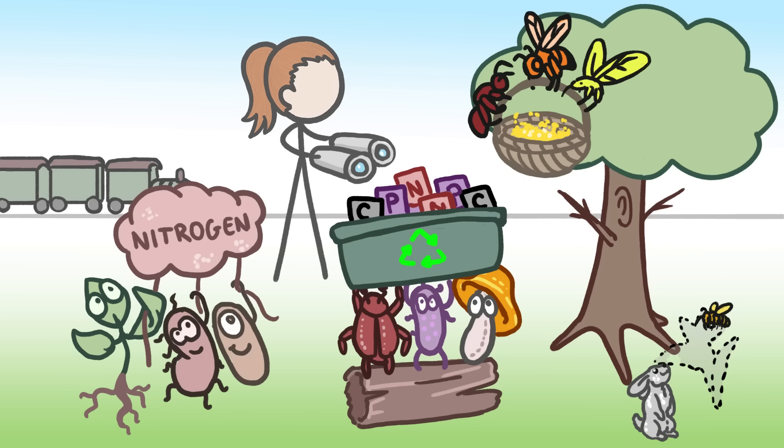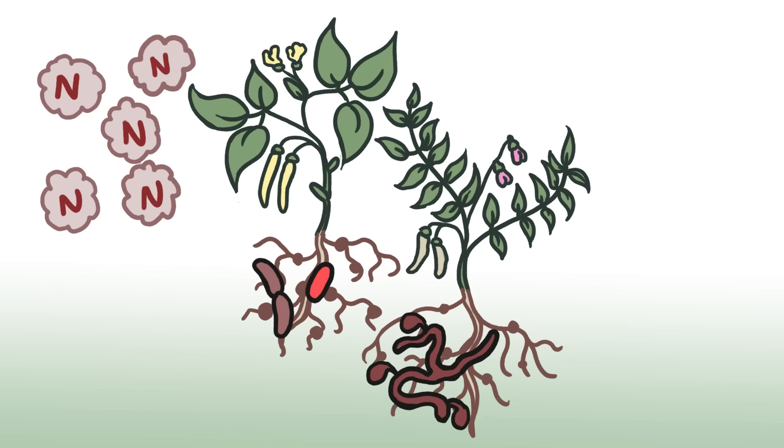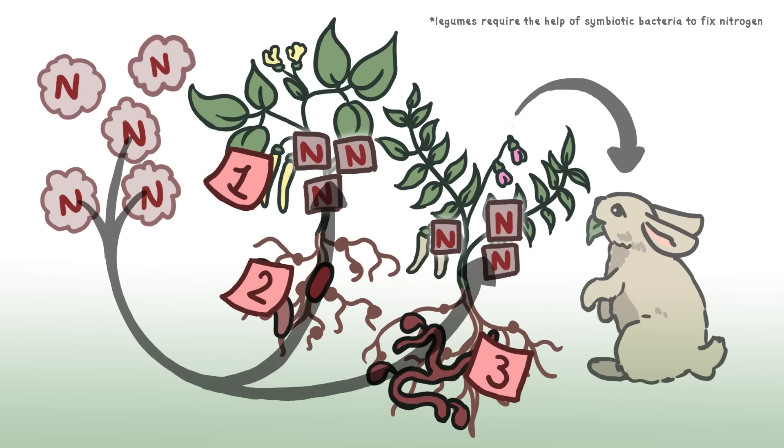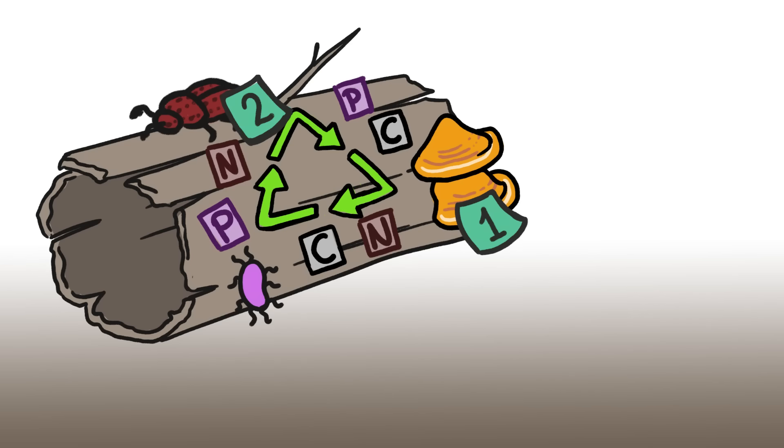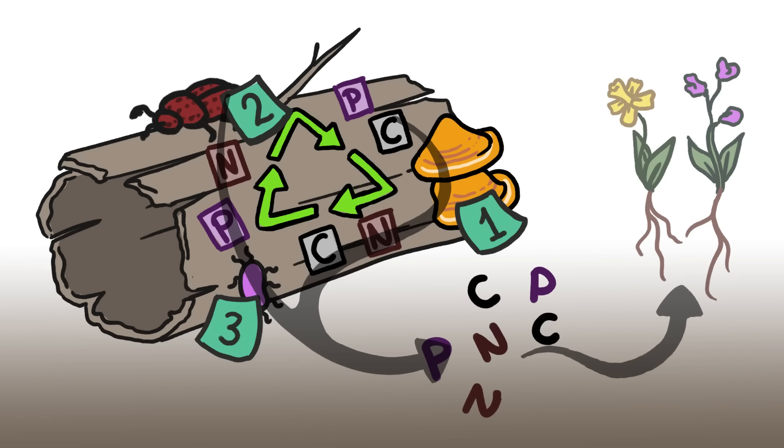That's because in some ecosystems, several very different kinds of organisms fill similar roles. Lots of species, from legumes to bacteria, capture nitrogen and make it available to other life. Fungi, beetles, bacteria, and more break down dead stuff and recycle the nutrients inside.